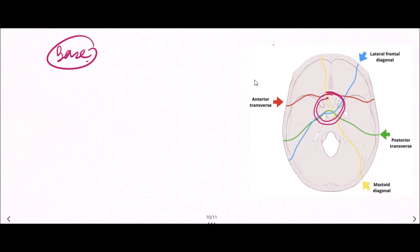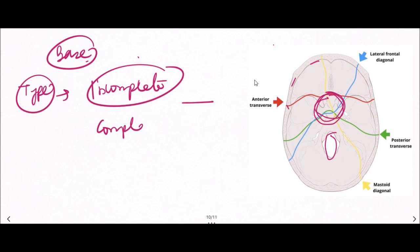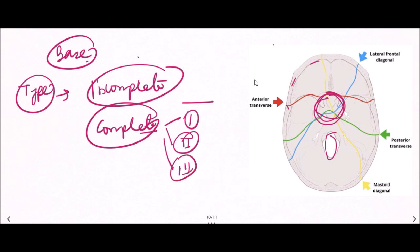Base of skull fractures most commonly run across the pituitary fossa. The skull base includes the anterior cranial fossa, middle cranial fossa, posterior cranial fossa, foramen magnum, and the petrous parts of the temporal bones. Basal fractures can be incomplete — where the fracture line does not cross to the other side — or complete, where the fracture line crosses across.